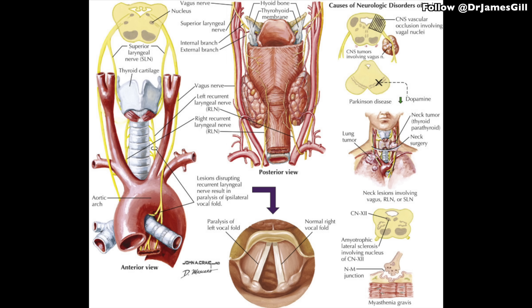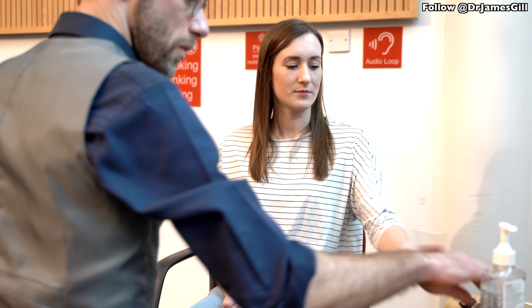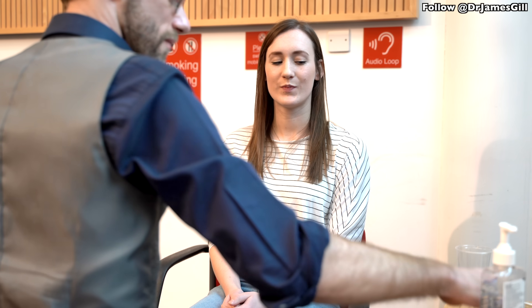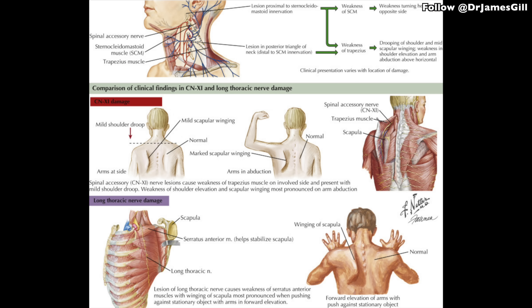Cranial nerve 9, the glossopharyngeal nerve, provides pharyngeal sensation and is not routinely tested. Cranial nerve 10, the vagus nerve, is involved with palatine movements — the ability to phonate and the movement of the soft palate. It is tested using a pen torch by asking the patient to say 'ah' while looking at the top of their mouth. Cranial nerve 11, the spinal accessory nerve, is required for movement of the trapezius and sternomastoid muscles, and a lesion here will cause weakness in scapula and neck movements.